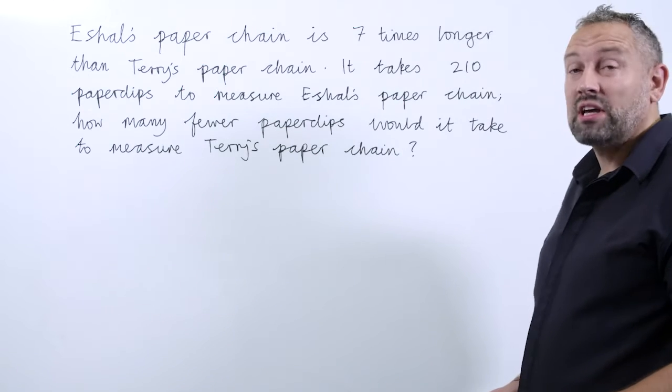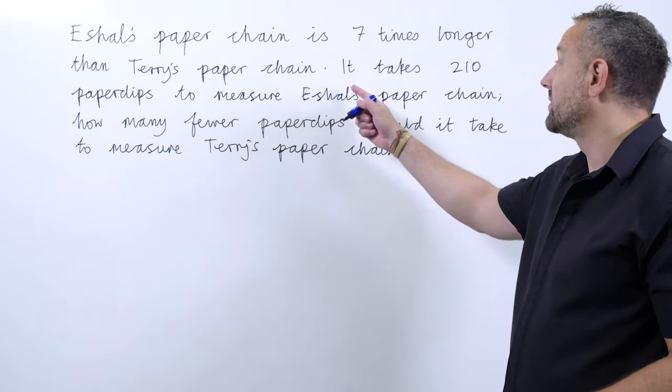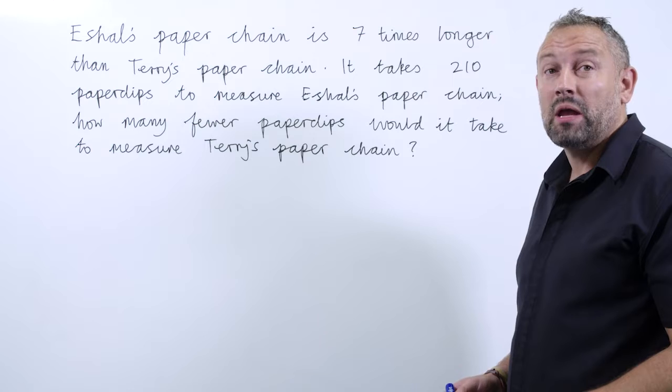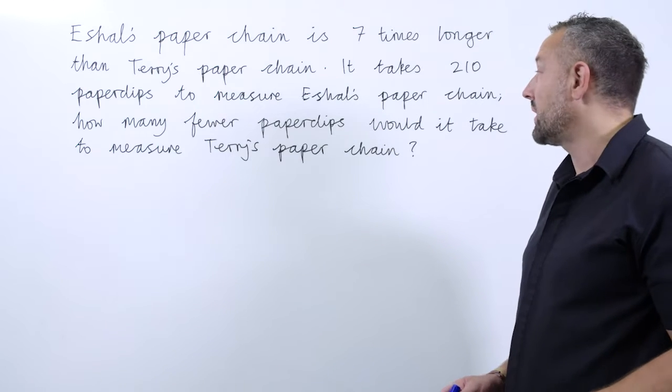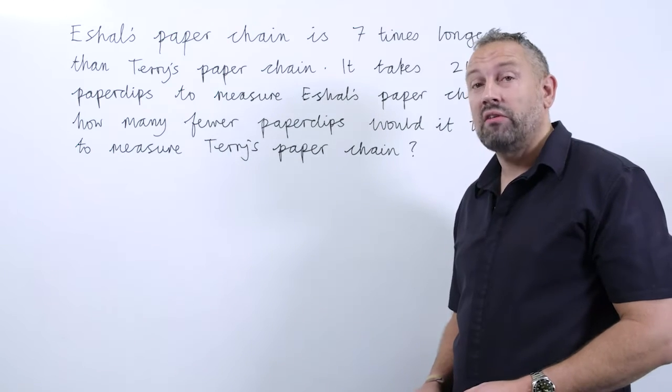Eichel's paper chain is seven times longer than Terry's paper chain. It takes 210 paper clips to measure Eichel's paper chain. How many fewer paper clips would it take to measure Terry's paper chain?